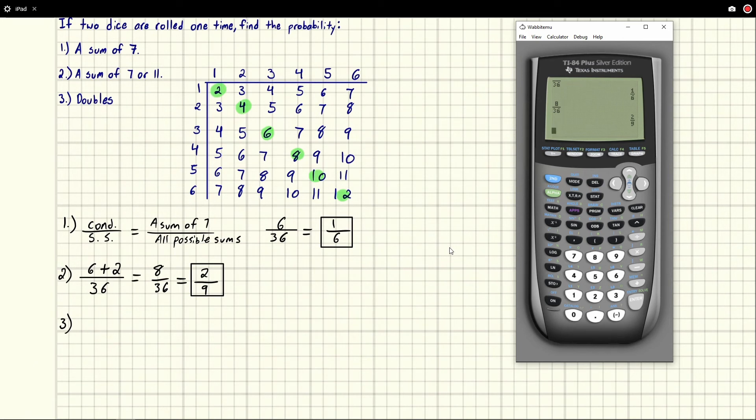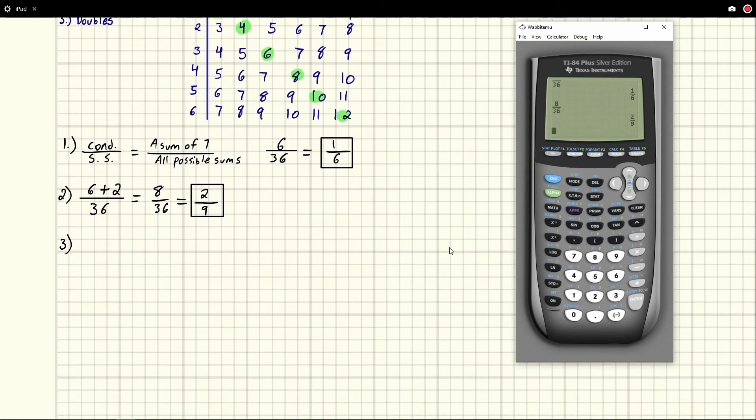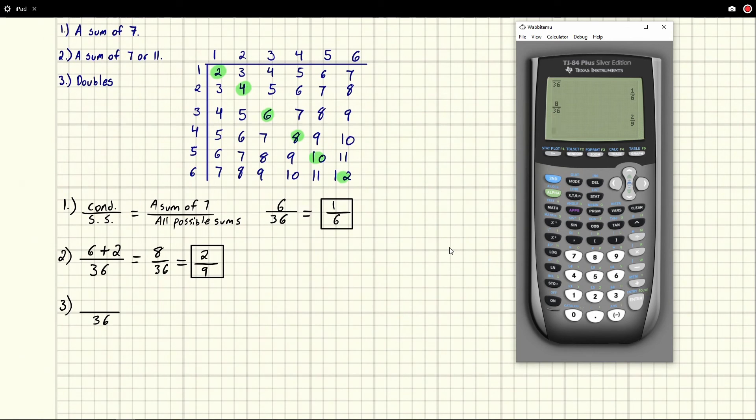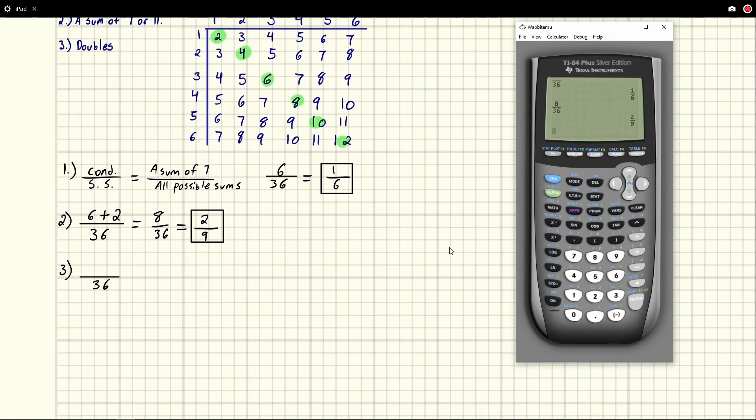And so we see for doubles, well that's just all of these. So our bottom number is still 36 because it's still all the possible rolls. But the top number is all the doubles. So we have one, two, three, four, five, six. So there are six possible doubles. And so we would say, well it's six, and that is again just one sixth like it was before. That's it, that's all there is to it.